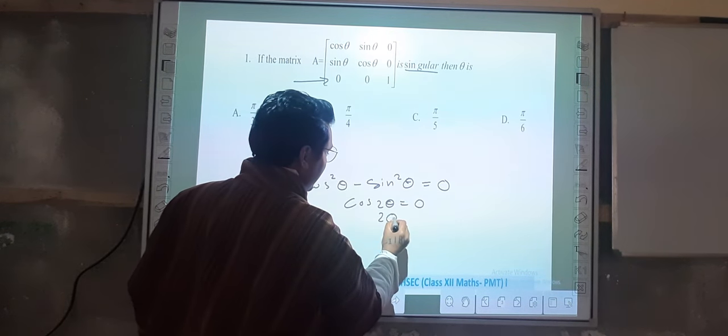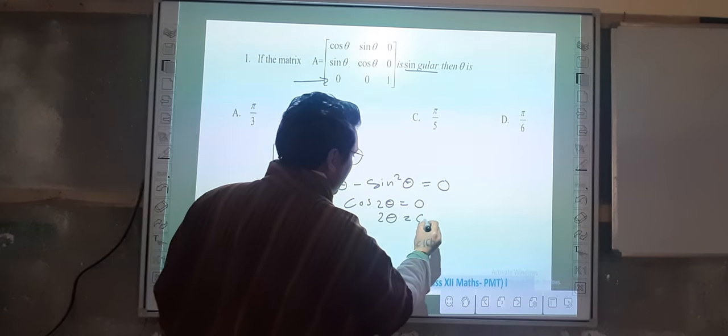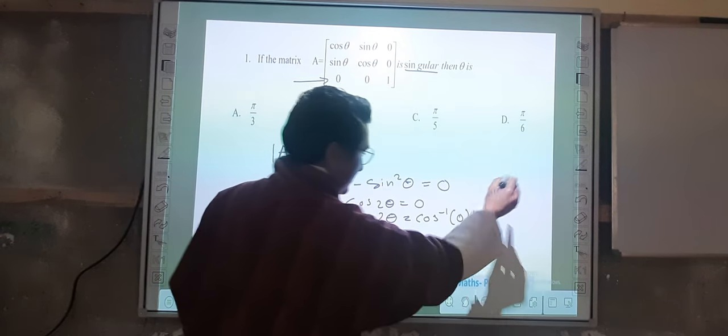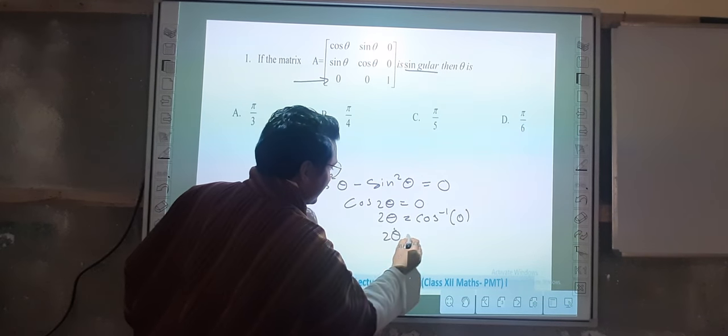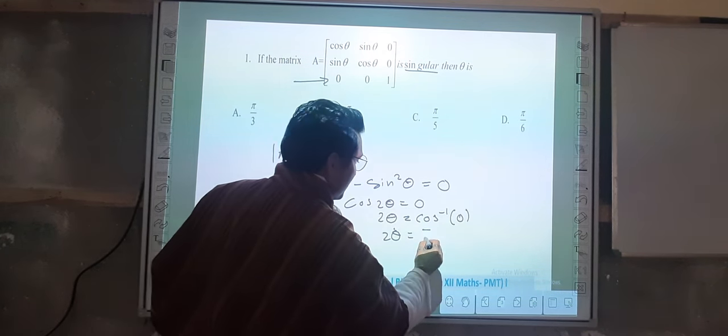Just keep two theta here and take cos to the other side. So it is cos inverse of zero. Now two theta is equal to cos inverse of zero, which is pi by two.